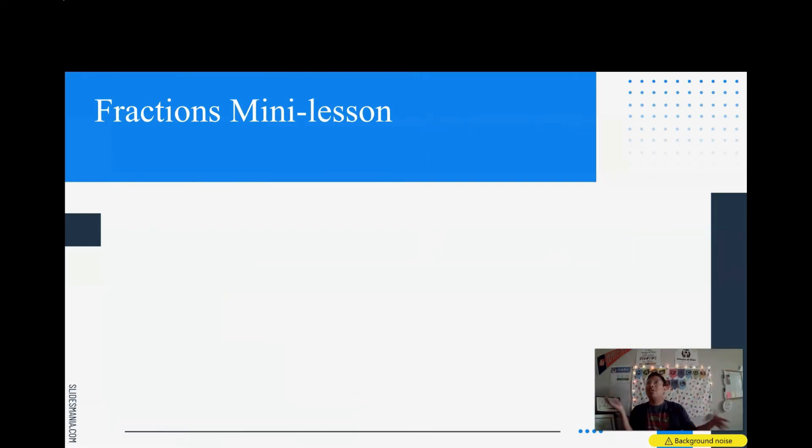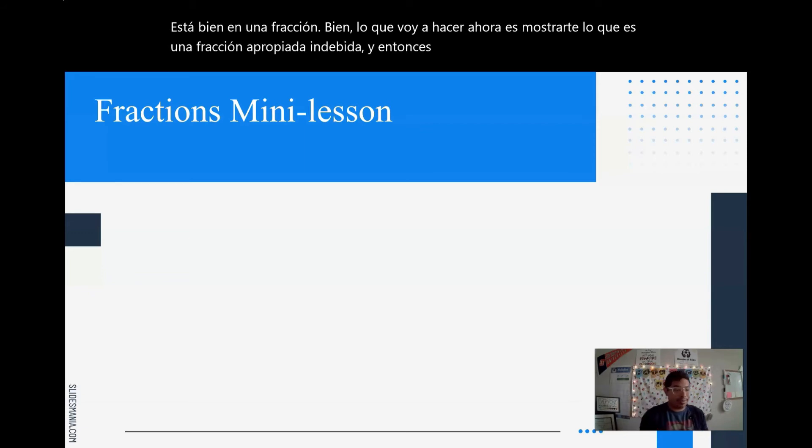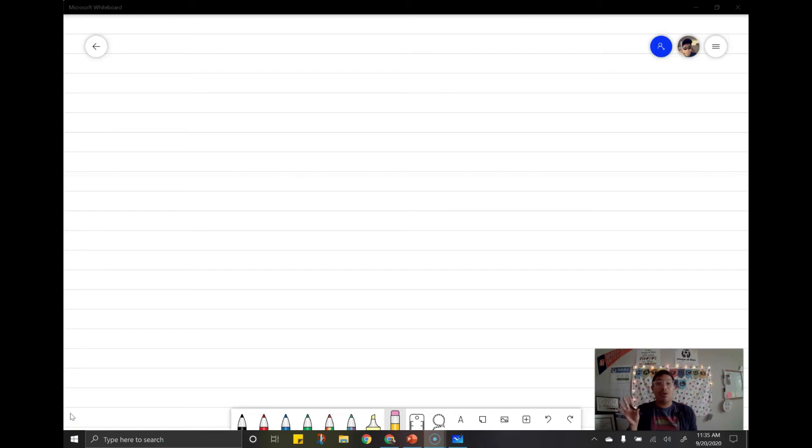All righty. So, we just learned about numerators and denominators and a fraction. So, what I'm going to do now is show you what an improper and proper fraction are, and then tomorrow we're going to dive in deeper. So, here is a fraction. Now, what is the three called again? When the number on top, what is that called? Good, a numerator. And what is the number on the bottom called? Good, my denominator. So, remember, denominator stands for total, and my numerator is how many equal parts there are.